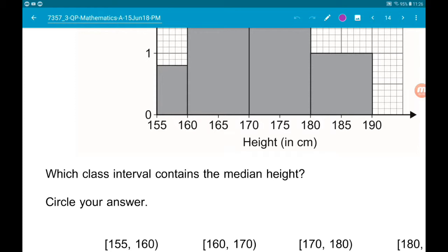So the median is the middle. What we need to do is work out how many students are in the histogram, divide that by two, and find which interval that number student would be in.